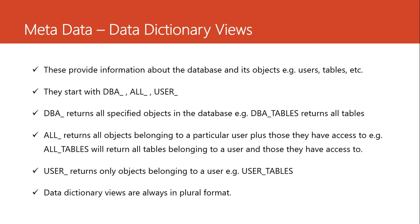When you say DBA_ followed by the object, it means we need all the information about that object. For example, if we need to know all the tables available in the database, we say DBA_TABLES or SELECT * FROM DBA_TABLES. When we say ALL_ we mean return all the specified objects belonging to a particular user plus those they have access to. For example, if we have a user called Brian, Brian has his own tables but Brian can also be given access to tables belonging to Aisha.